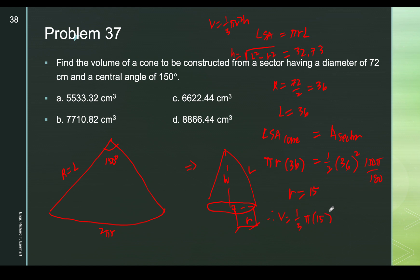Therefore the volume of the cone = (1/3)π r² h = (1/3)π(15²)(32.73) ≈ 7,711 cubic centimeters. So 7,711 is the correct answer.